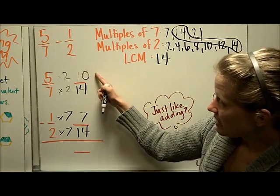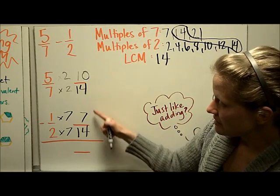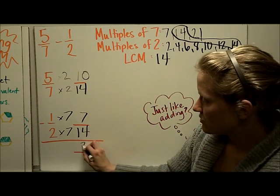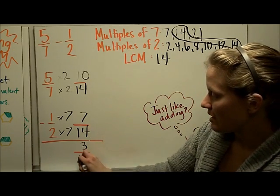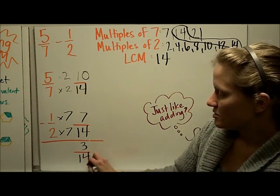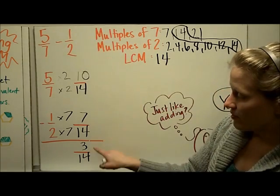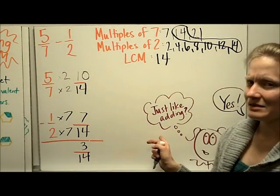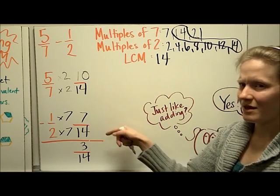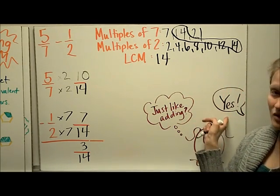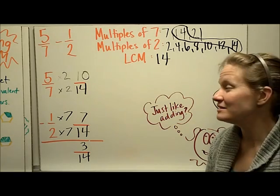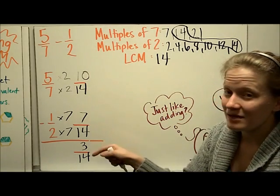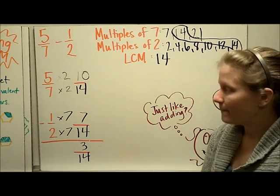Now I do ten-fourteenths minus seven-fourteenths. Ten minus seven is three, and I keep the same denominator, so the answer to the original problem is three-fourteenths. When you are subtracting fractions with unlike denominators, it's the exact same process as adding — just make sure you subtract instead of add at the last step.